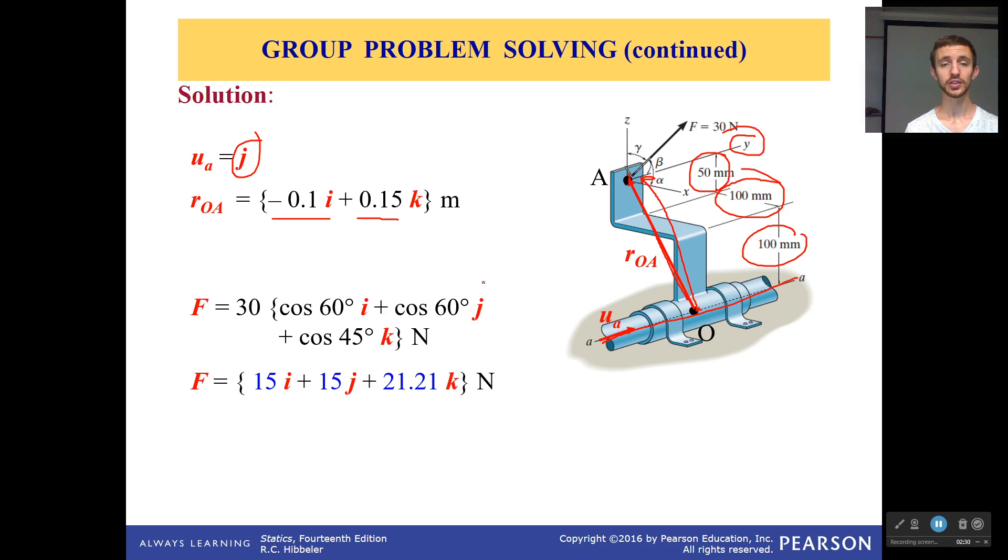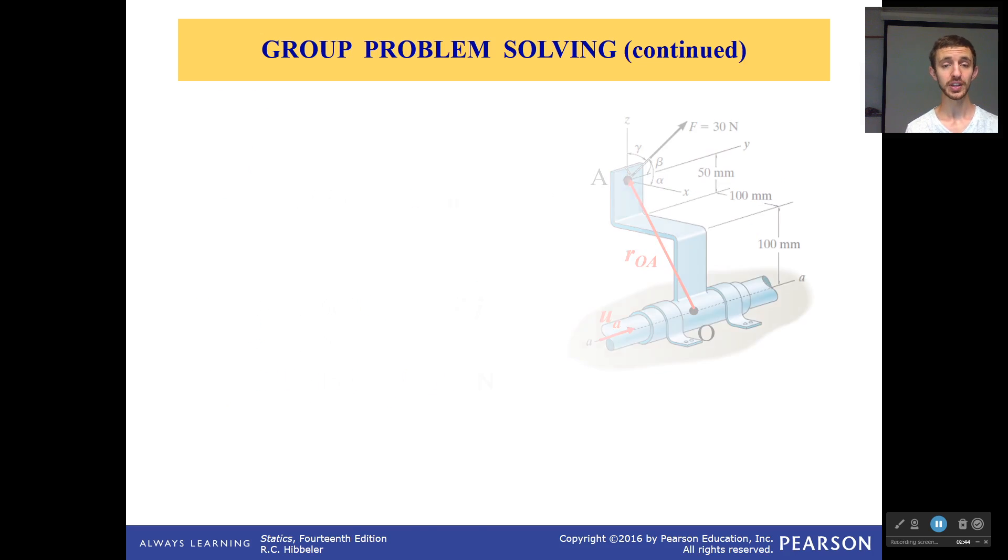And then we use our direction cosines, which are 60, 60, and 45, based on the problem statement, to calculate the unit vector for the force and multiply that by its magnitude to get our force vector. So this is the first thing. We have everything we need now for the triple scalar product.